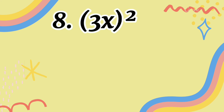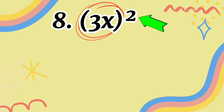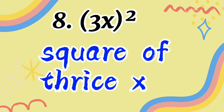Number 8: a constant and variable are written side by side inside parentheses, and there is a number outside indicating an exponent. Since the constant and variable are adjacent, there is multiplication. So we have two operations: exponent and multiplication. We can translate it as: square of thrice x.